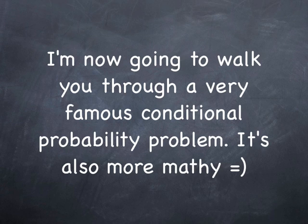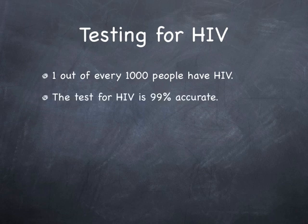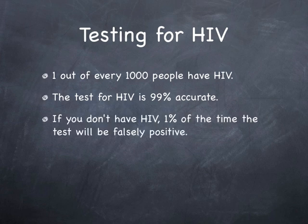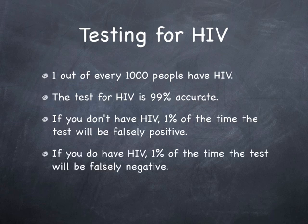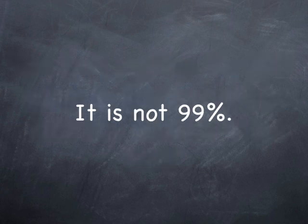I'm now going to walk you through a very famous conditional probability problem — it's also more mathy. We are going to test for HIV. Here are some statistics that I just made up. One out of every thousand people has HIV. The test for HIV is 99% accurate. This means if you don't have HIV, 1% of the time the test will be falsely positive. And if you do have HIV, 1% of the time the test will be falsely negative. You test positive for HIV — what is the probability that you actually have HIV? It is not 99%.